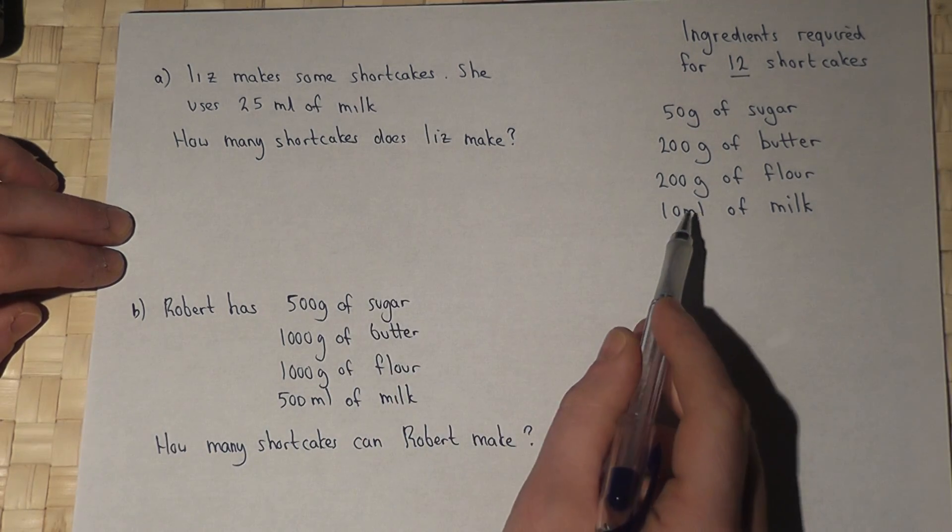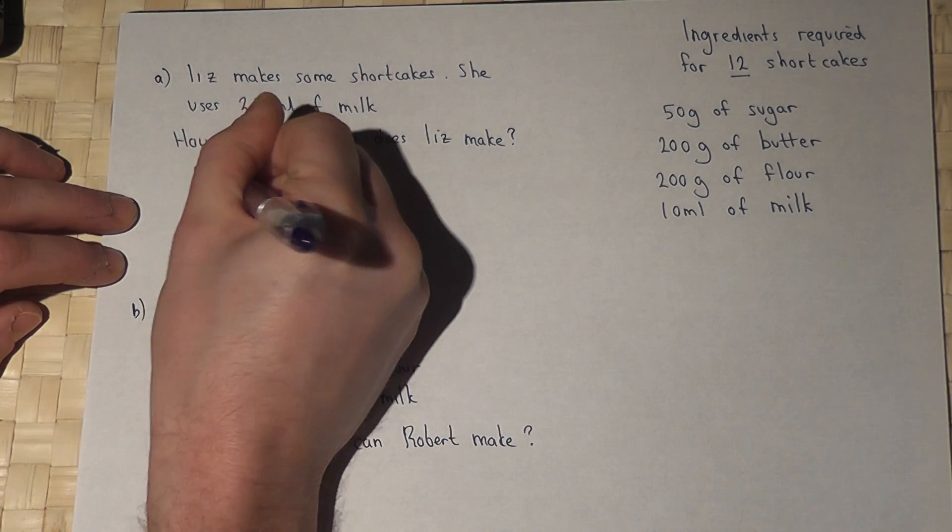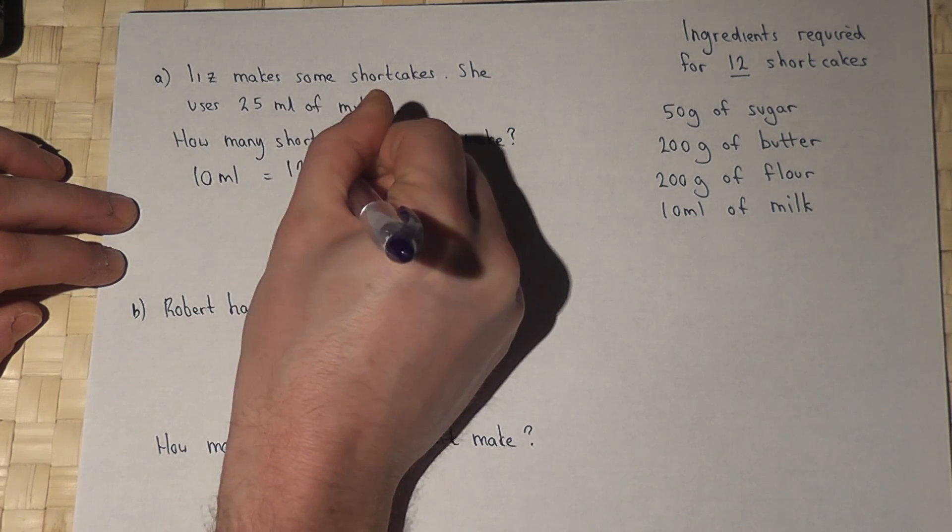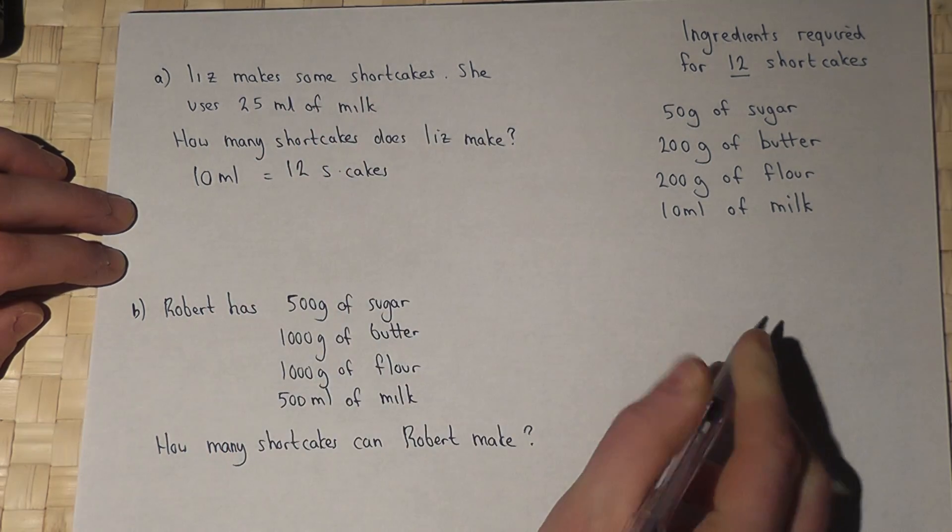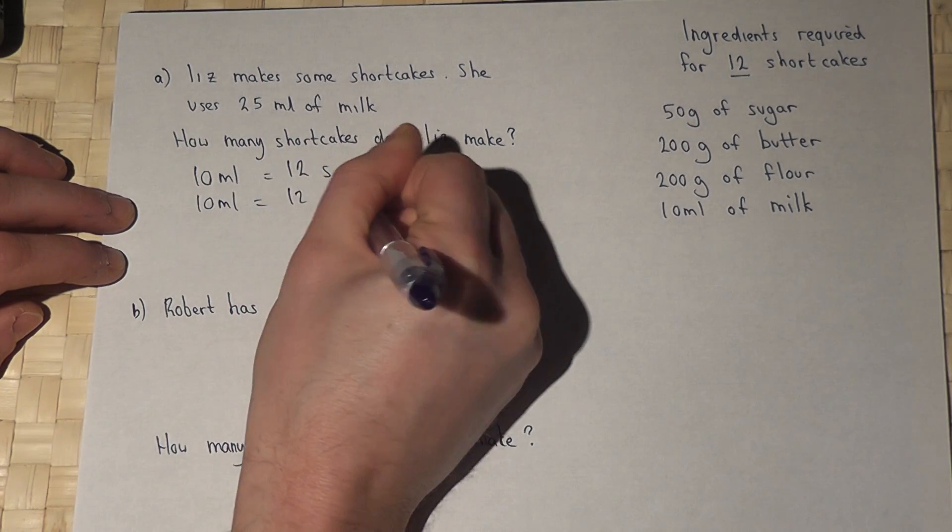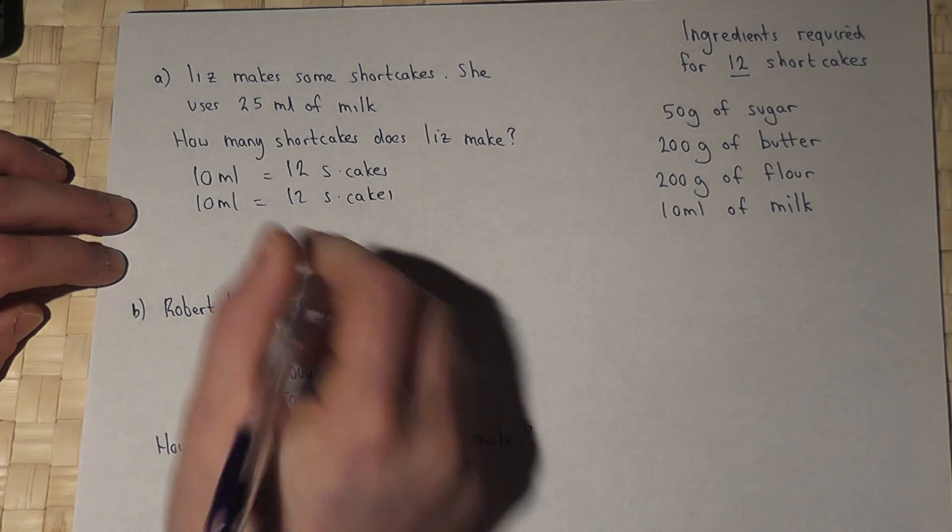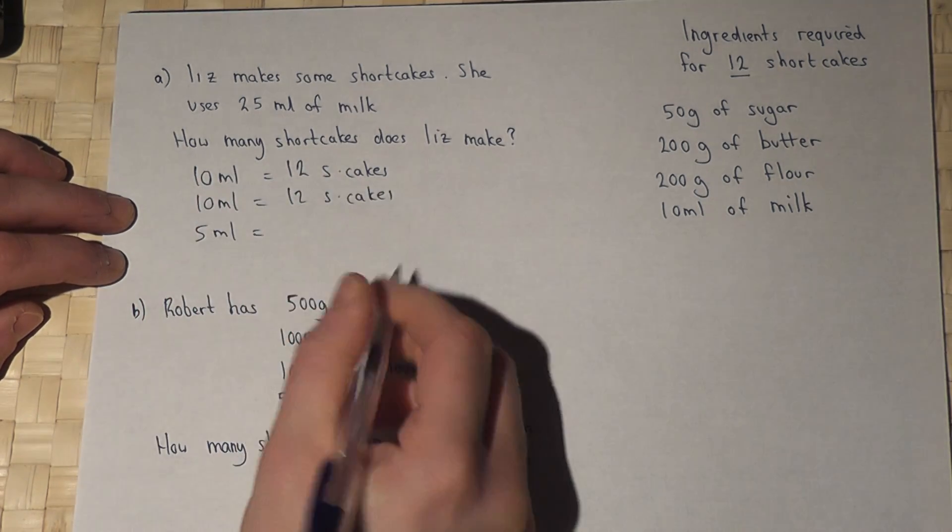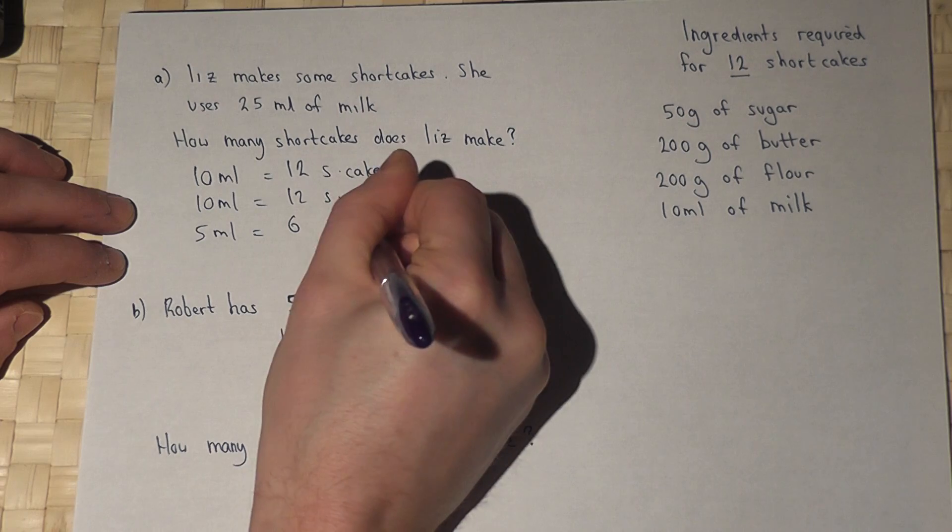Now, if we know that 10 milliliters of milk equals 12 shortcakes, then another 10 milliliters will make another 12 shortcakes. So another 5 milliliters will make half of this, which is 6 shortcakes.